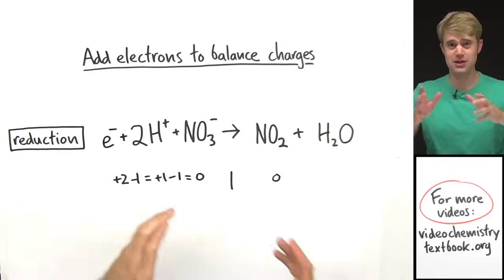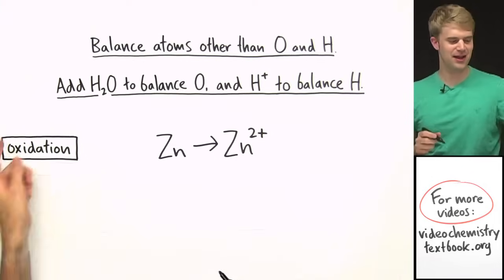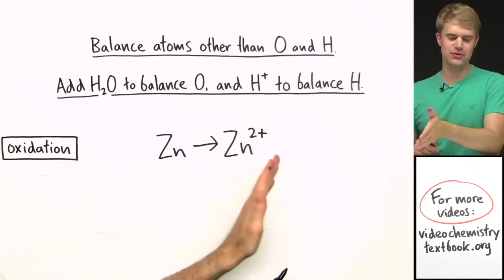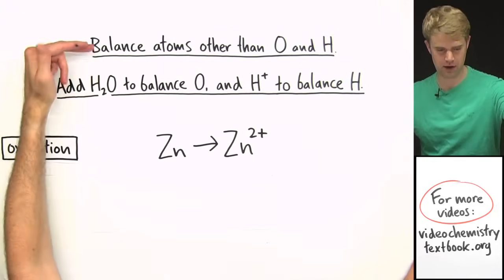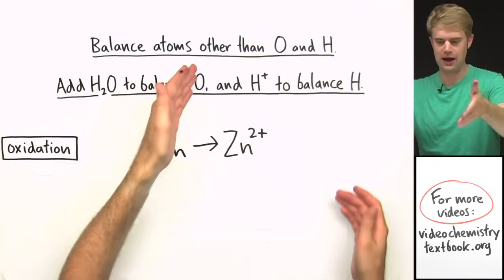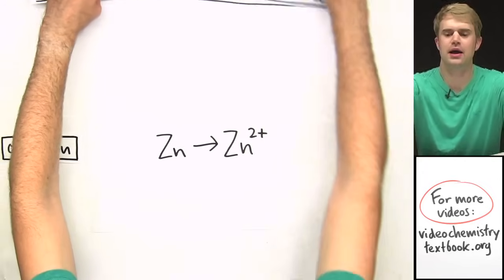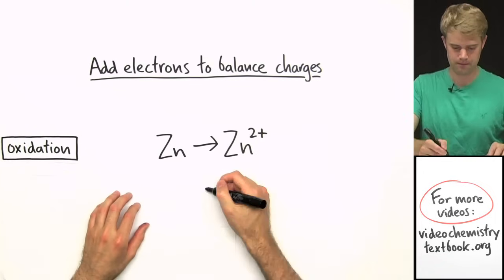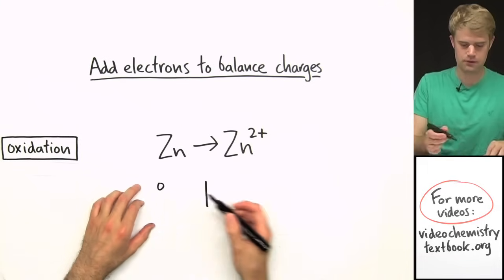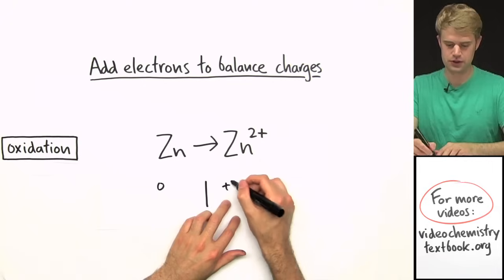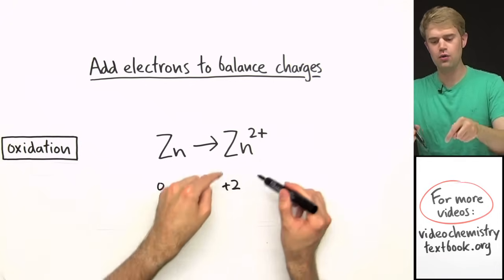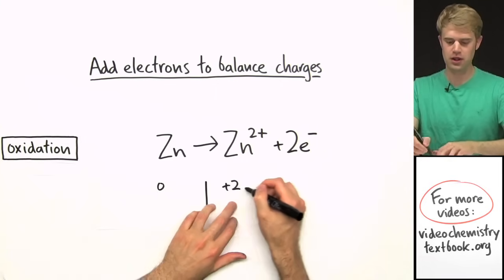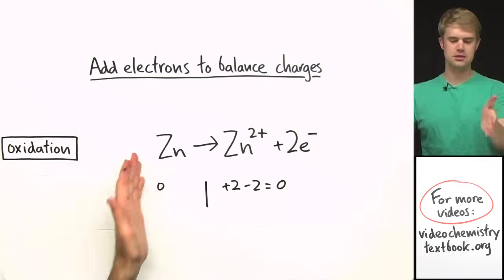Now I'll balance atoms and charges for the oxidation half-reaction. Balancing atoms is easy — I just have one element and one atom of each on both sides: one zinc here, one zinc here. No oxygen or hydrogen to worry about. So I skip right to adding electrons to balance charges. The left side has zero charge; the right side has Zn²⁺, giving plus 2. I need to lower the right side by 2, so I add 2 electrons: plus 2 minus 2 gives zero. Charges are balanced.